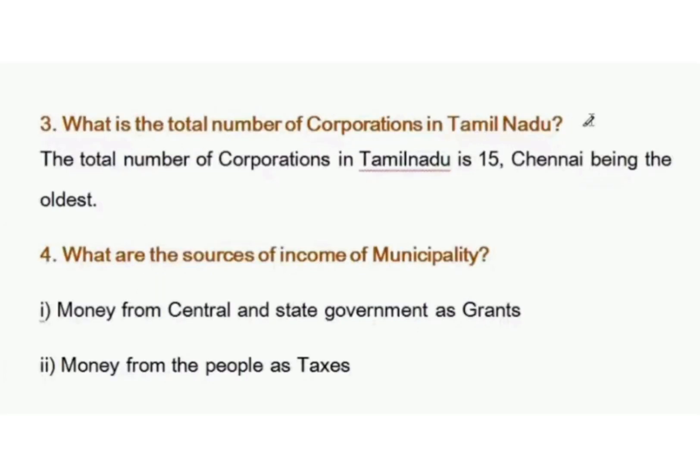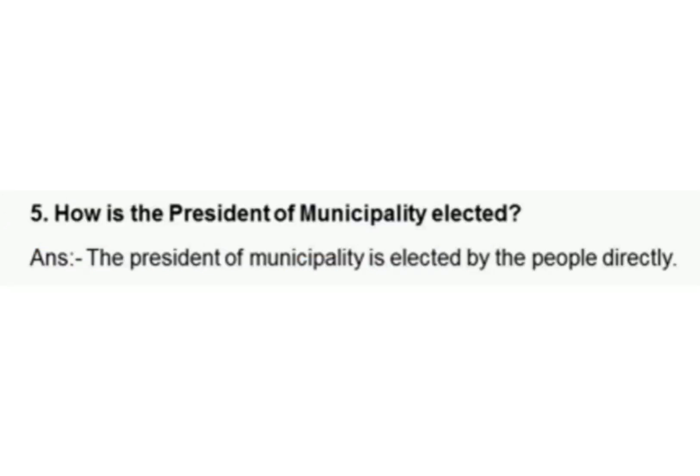The total number of corporations in Tamil Nadu is 15, with Chennai being the oldest. The sources of income of a municipality are: money from central and state government as grants, and money from the people as taxes.